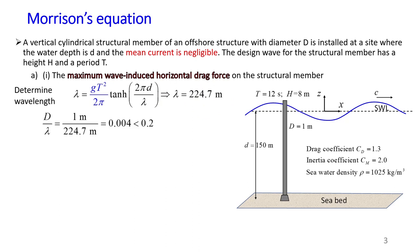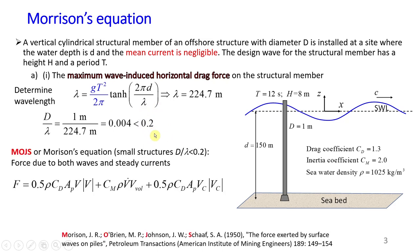Now I need to identify if I can use Morrison's equation to calculate maximum forces. Morrison's equation is applicable for small structures, which are defined depending on the ratio of diameter D divided by wavelength lambda. My ratio is much smaller than the limit of 0.2. Therefore, Morrison's equation is applicable.